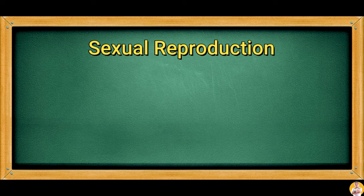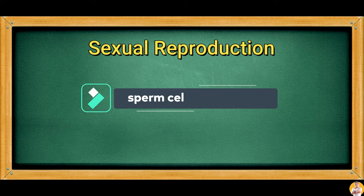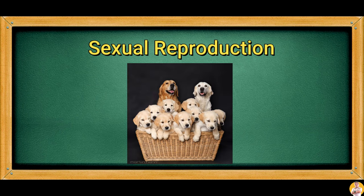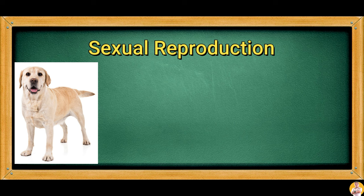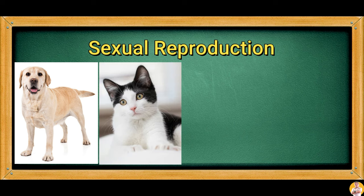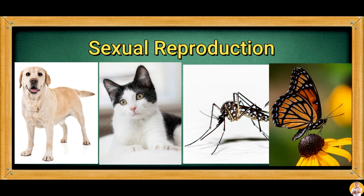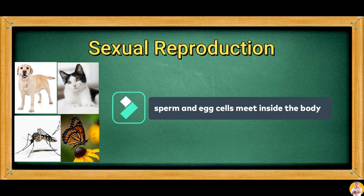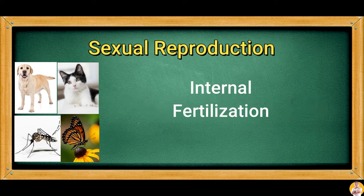Sexual reproduction always involves the presence of sperm cell and egg cell. These two cells carry the genetic materials from the father and mother respectively. Dogs, cats, mosquitoes, and butterflies reproduce sexually, and among these animals, sperm and egg cells meet inside the body — this is called internal fertilization.